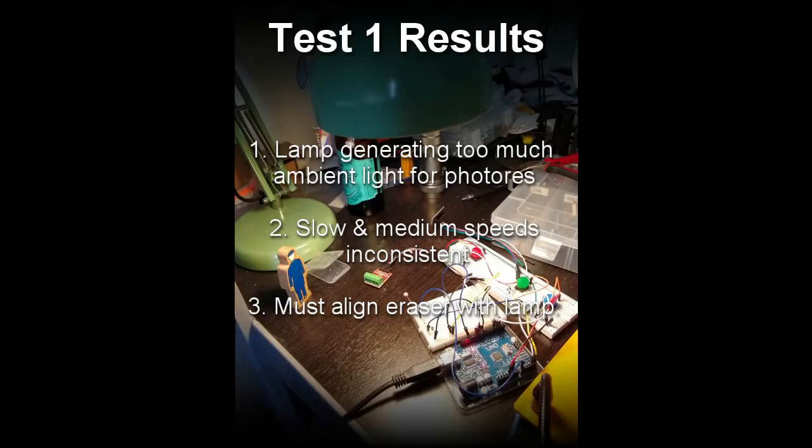Alright, so test one results show that that lamp was acting as a floodlight, generating too much ambient light into the photoresistor. And this gave inconsistent readings when moving the eraser at slow and medium speeds. Also, there might have been an issue where I was not aligning the eraser properly between the photoresistor and the lamp, also giving inconsistent readings. So let's try and move on to test two and see what we got.